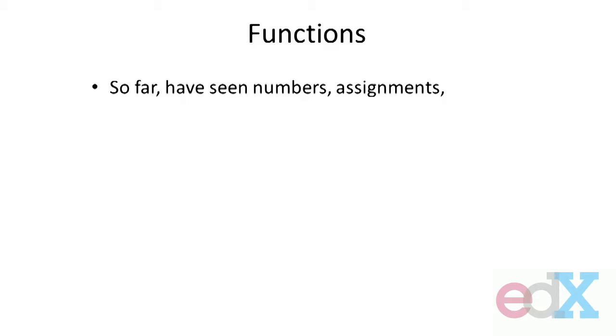So far, we've been building up our repertoire of Python expressions. We've seen numbers and strings as primitive data objects. We've seen assignment, the ability to give a name to a value. We've seen input and output characteristics. We've seen the ability to make comparisons. And we've added in looping constructs, things like for and while loops.